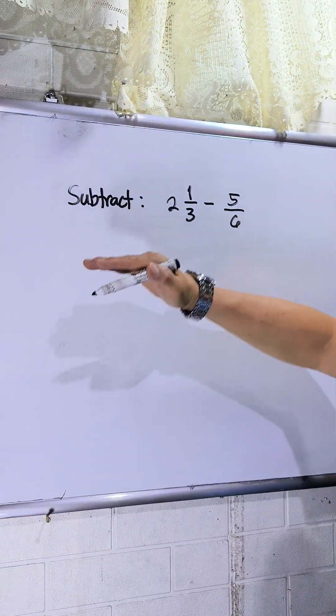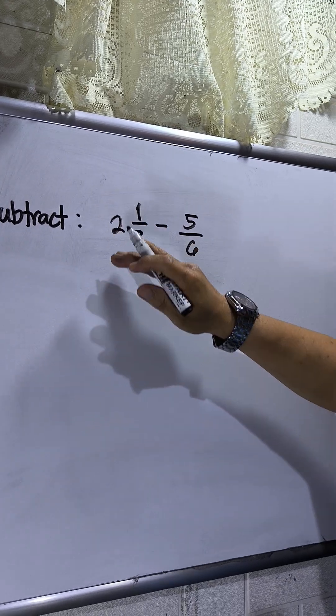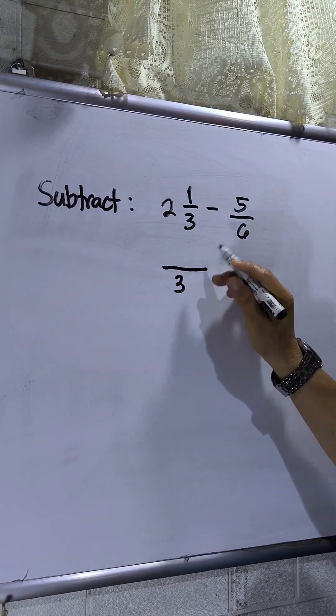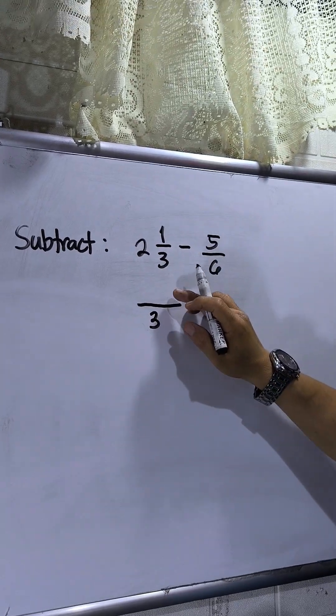Hello everyone kids, join with me for this fraction problem. I have here subtract: 2 1/3 minus 5/6. So first I have to write the denominator and then I have to rename this mixed number to an improper fraction.